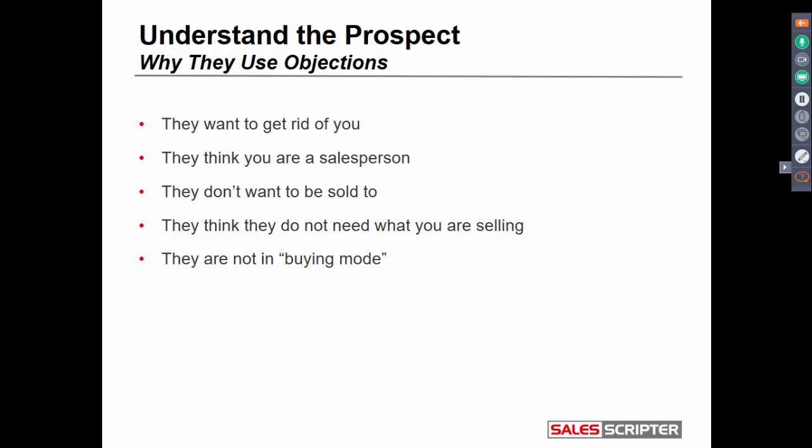Prospects give you objections sometimes not because they truly believe the objection - they're giving you the objection to get rid of you. One of the reasons they're trying to get rid of you is because they sense that you're a salesperson and you're going to try to sell to them. They don't feel like being sold to, maybe because they're working, or because a salesperson trying to sell to you is just kind of annoying.